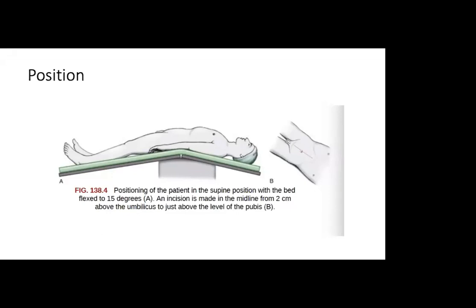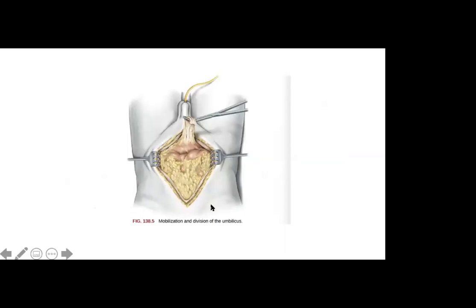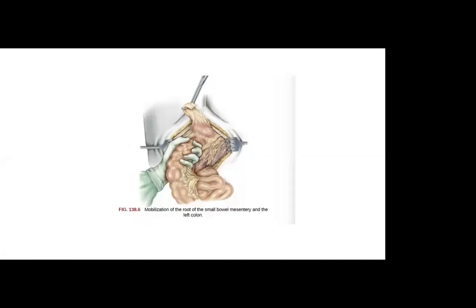Upward retraction of the umbilicus aids in the identification of the linea alba. The fascia should be divided and the space of Retzius is entered. This picture shows the mobilization of the umbilicus. A blunt dissection is performed to release the bladder from the pelvic sidewall attachments bilaterally. This is carried in a cephalad direction to the level of the vas deferens in men and the round ligament in women. A peritoneotomy is made lateral to either medial umbilical ligament and urachus.